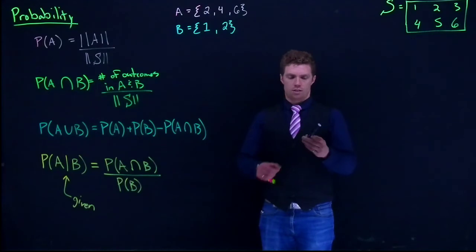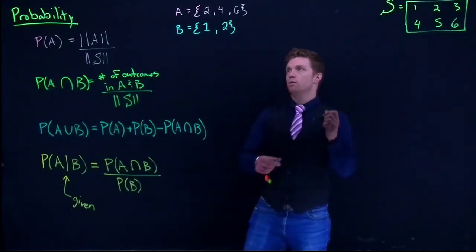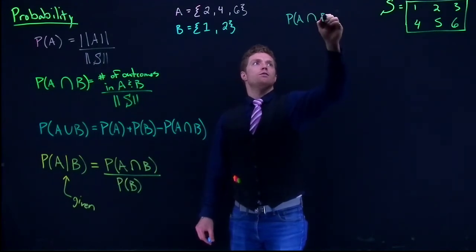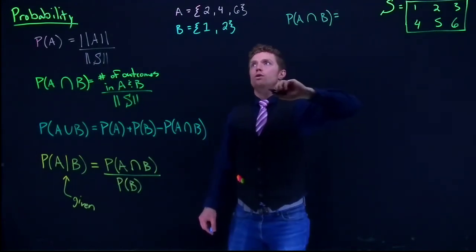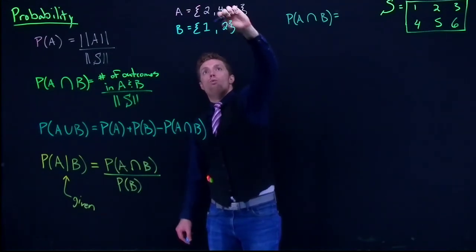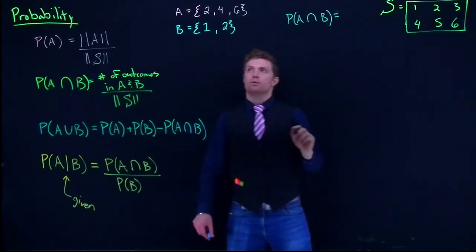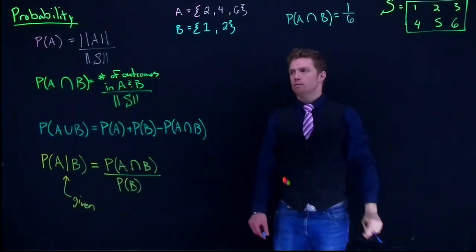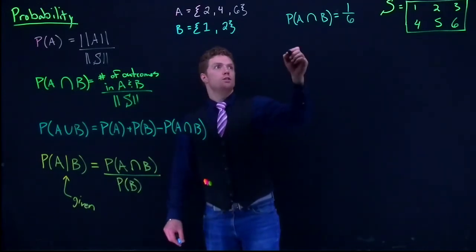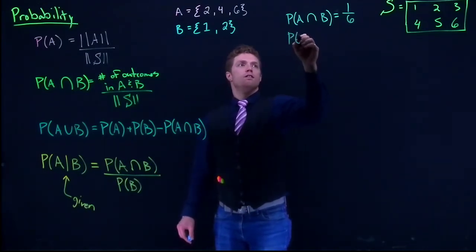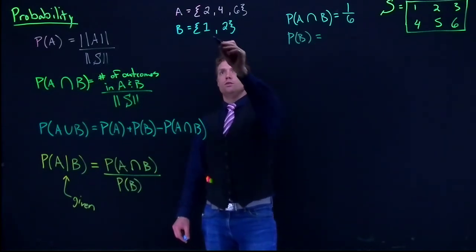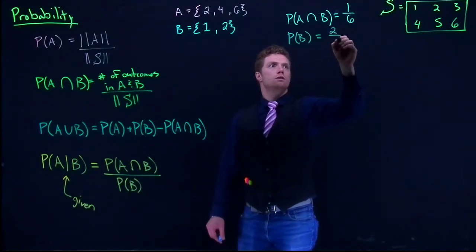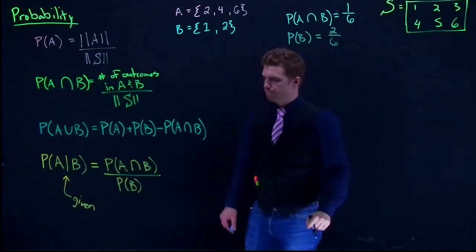We already did that before and it's not too hard to do. So we know that the probability of A intersect B, that equaled just one thing, one outcome overlapped between A and B. So that was one divided by six. So we've got the intersection. We need to know the probability of B. And that guy equaled two, two outcomes right here divided by our six total, two divided by six.